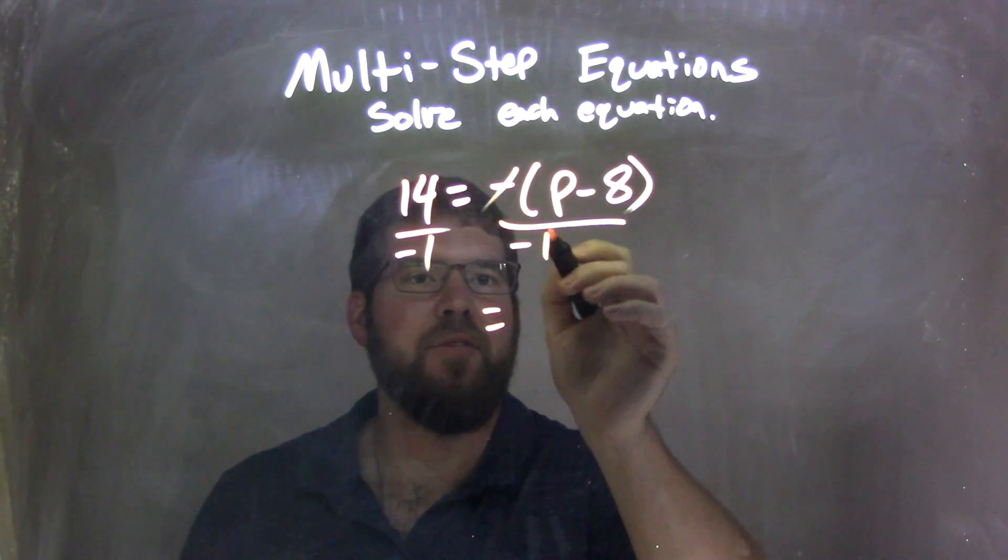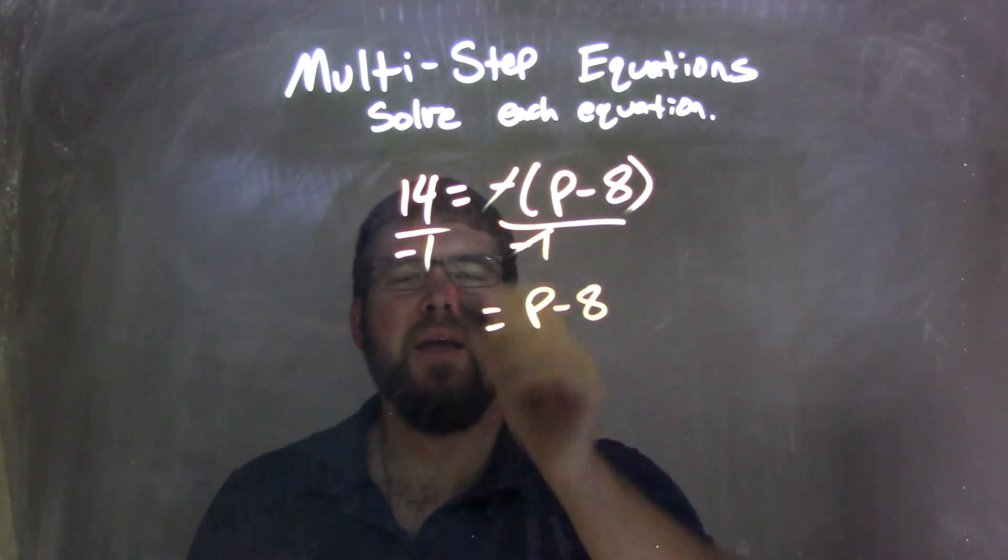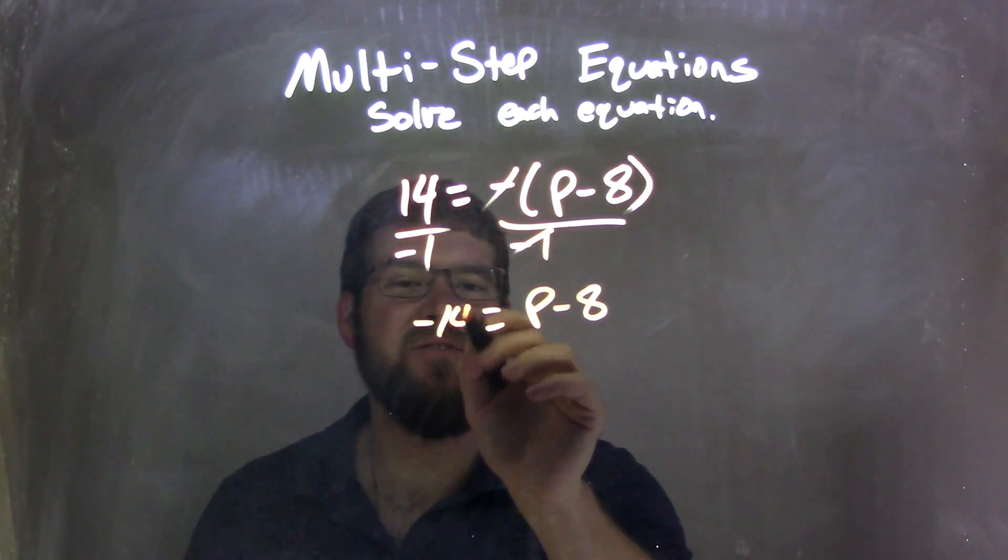What that does is get rid of that negative outside, so those cancel here, and we're left with just a p minus 8 on the right, and 14 divided by negative 1 is just a negative 14.